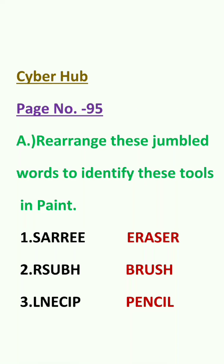Cyber Hub, page number 95. Exercise A: rearrange these jumbled words to identify these tools in paint. Number 1: S, A, R, R, E, E. Answer: eraser.